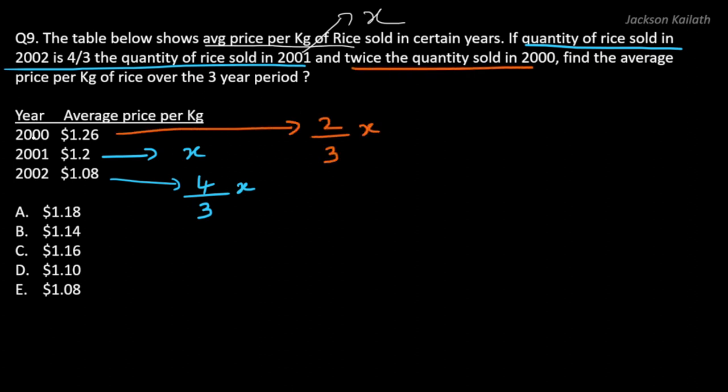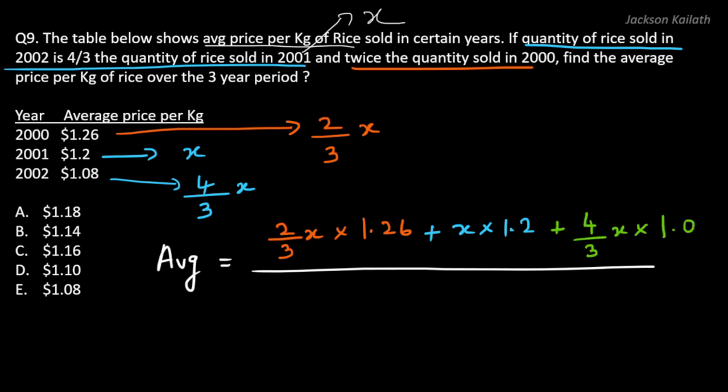All right, so we have the quantities and we have the prices. Now we just need to find the average across these three years. The average would be: what's the total amount spent in 2000? That would be 2/3 x times 1.26 because 1.26 is the average price. Similarly in 2001 the total amount spent would be x times 1.2, and in 2002 it would be 4/3 x times 1.08, and the total quantity sold across these three years would be 2/3 x plus x plus 4/3 x.